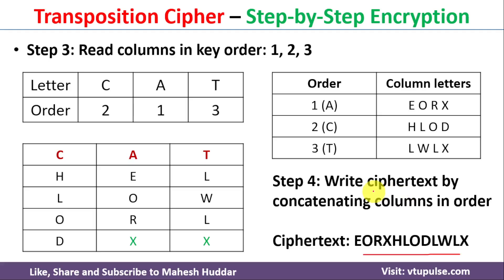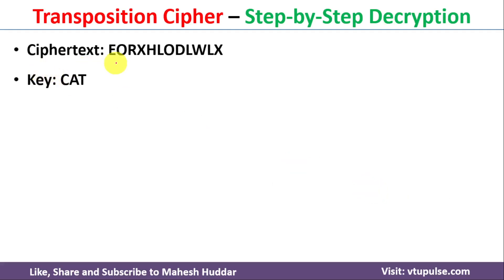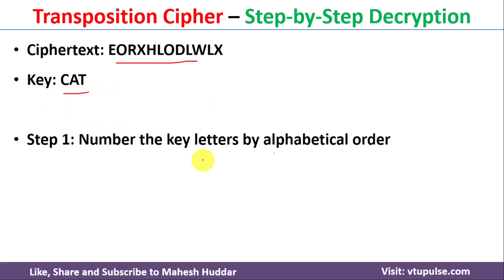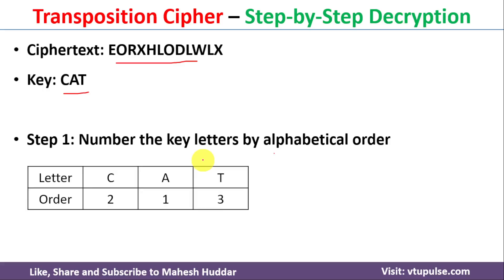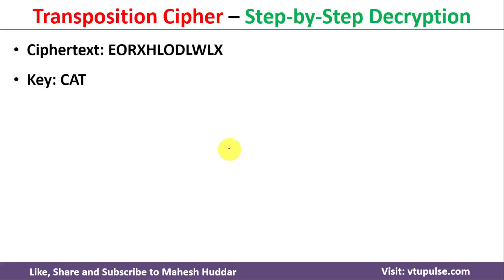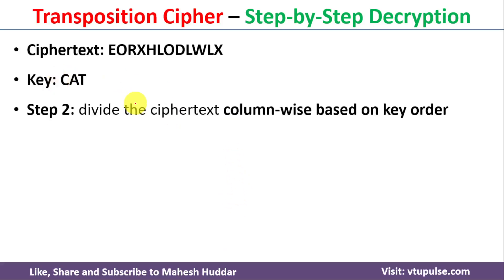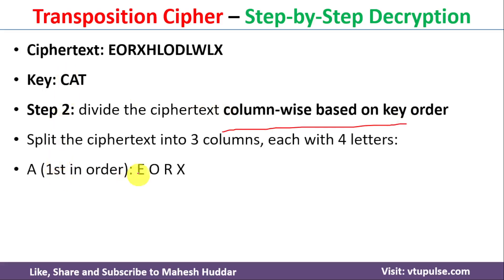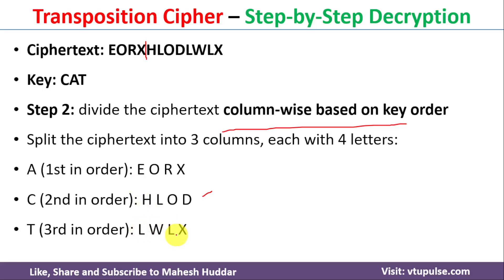Next we need to decrypt the message. To decrypt, we use the cipher text and the key 'cat'. Again we number the key letters in alphabetical order: A is 1, C is 2, and T is 3. We divide the cipher text column-wise based on the key order. For A we get E-O-R-X, for C we get H-L-O-D, and for T we get L-W-L-X.